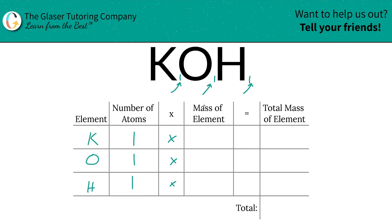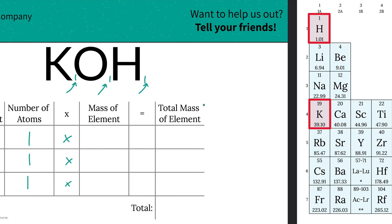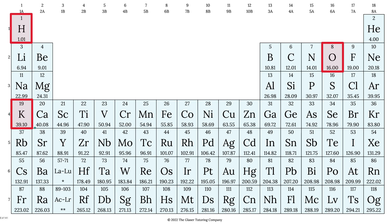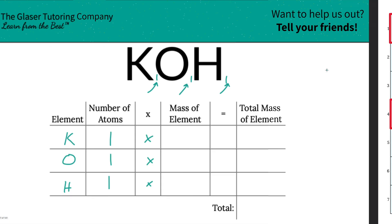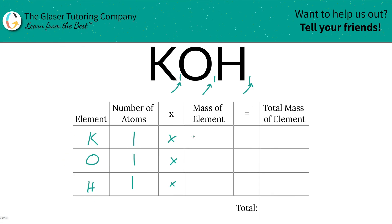Then multiply it by the mass of the element. We're going to use the periodic table to help us out. So the mass of potassium is 39.1, hydrogen is 1.01, and oxygen is 16. So let's plug them in.